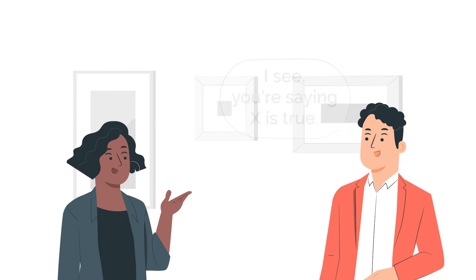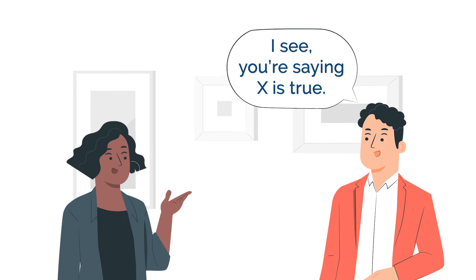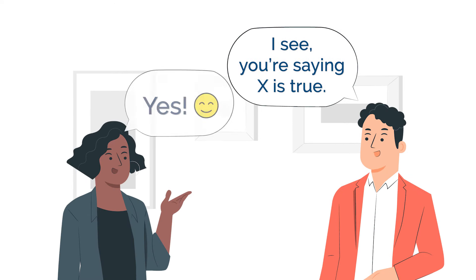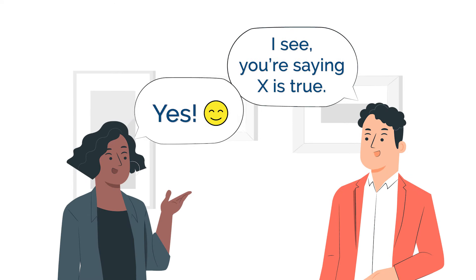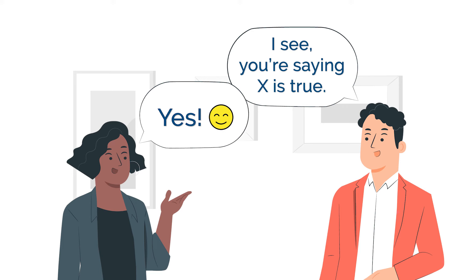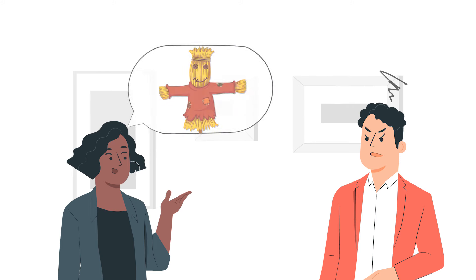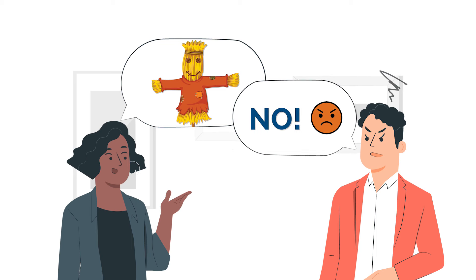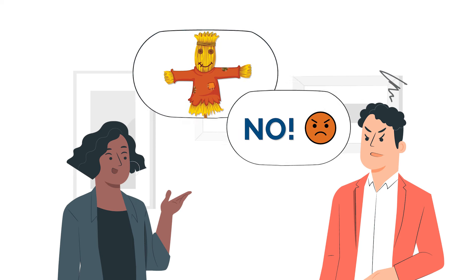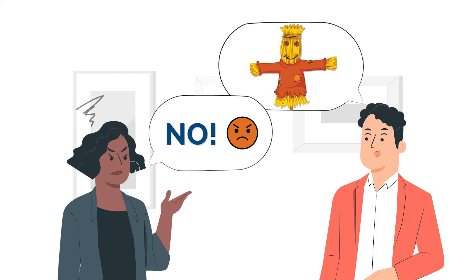To avoid committing a strawman fallacy, you must first actually care about not misrepresenting the argument that is being presented to you. You wouldn't like someone mischaracterizing your position, so don't do it to them.